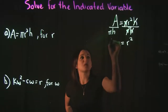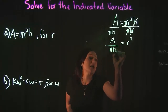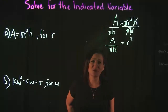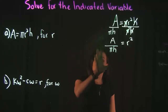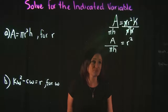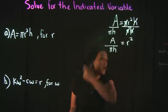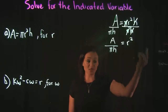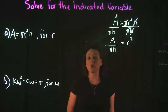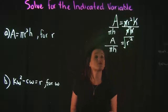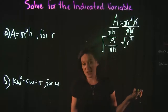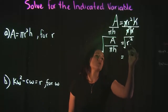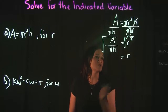On the left-hand side, we had A divided by pi h. Now we have no idea what A is or what h is, so there's nothing we can simplify — we just write it as A over pi h. We're almost done solving for r. We have r squared, and to get rid of the square, the opposite of a square is a square root. So I'm going to take the square root of both sides. On the right-hand side, the square and the square root cancel, leaving me with r.